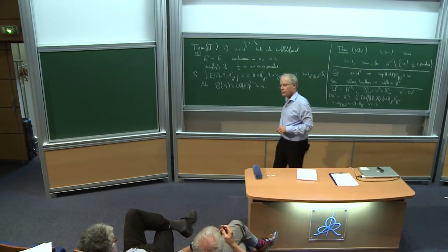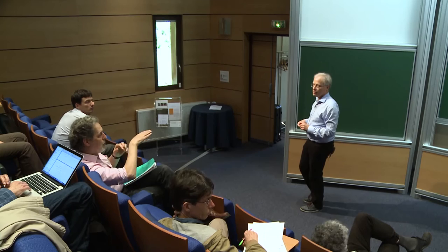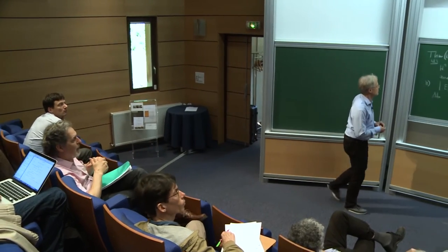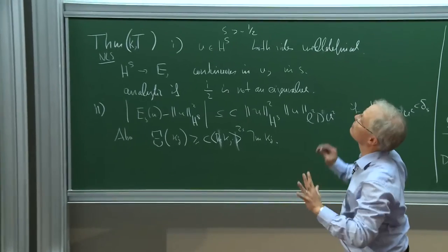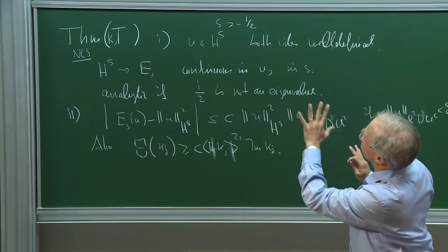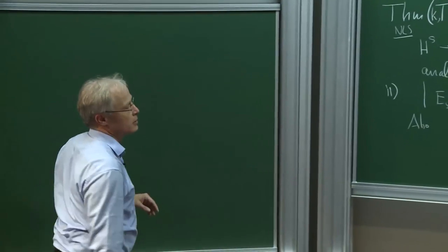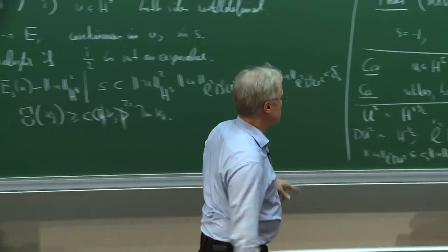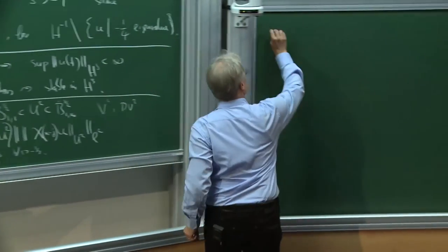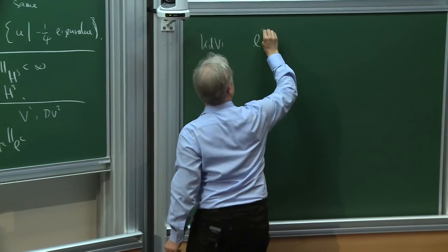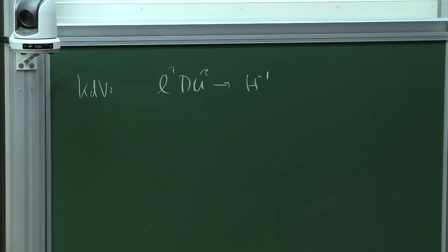Question: if s is between −1 and −1/2, then you might not have L² — is that correct? The assumption s > −1/2 applies to both parts of the theorem; nothing makes sense below that. For the KdV analog, one simply replaces L² DU² by H^{−1/2} and takes H^{−1}.